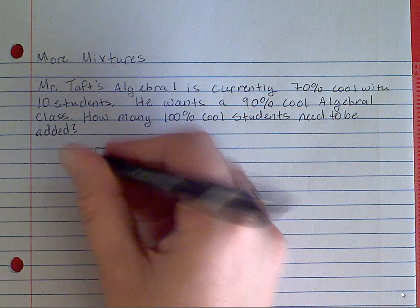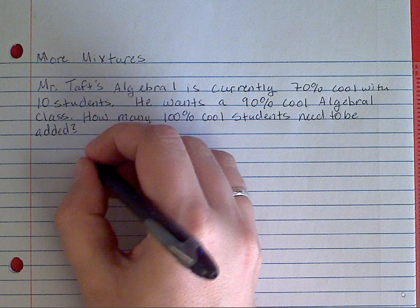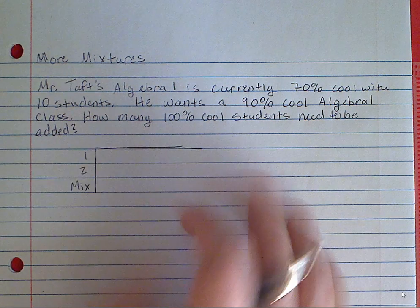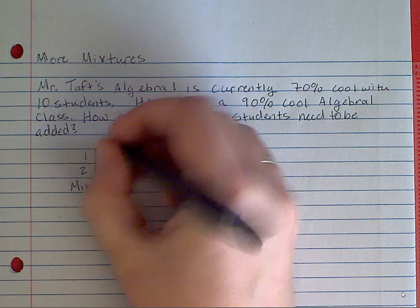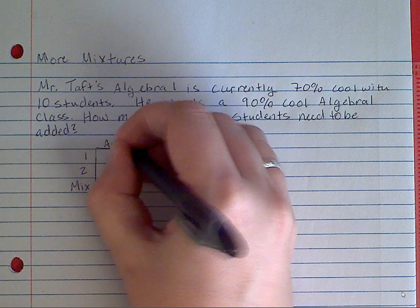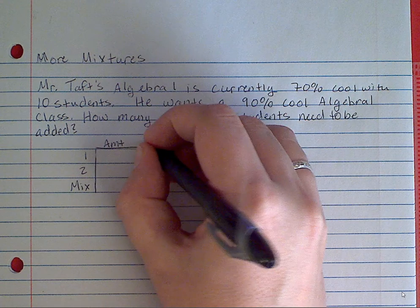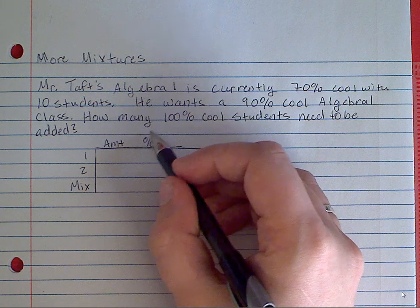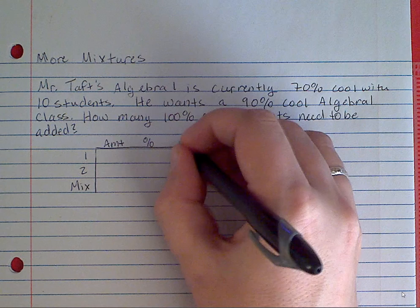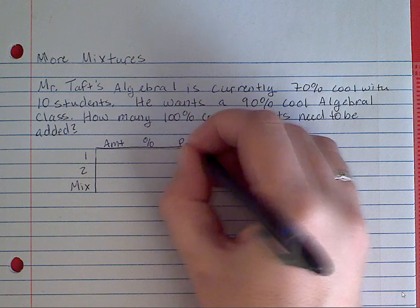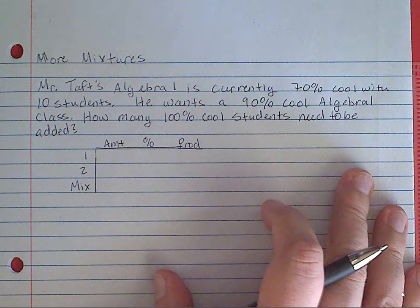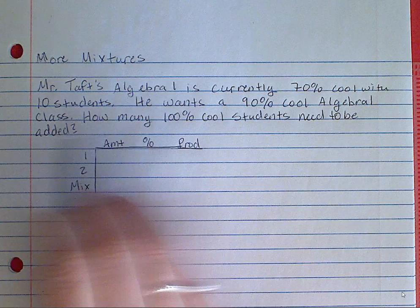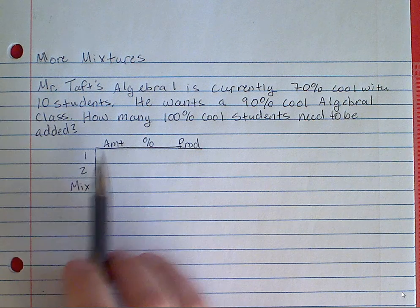So it's still going to be three points and we still have to make a table first. Our table is still going to have on the left-hand side: thing 1, thing 2, and then the mixture. Along the top we're going to have amount, percent — this could be dollars if you're looking at a mixed-nut problem — and then products. So Mr. Taft's Algebra 1 class: 70% cool with 10 students. So for thing 1, what's the amount and what's the percent?